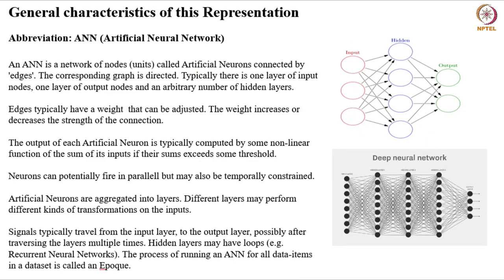While the real biological system is very complex and heterogeneous, we now turn to computer science and define what we call the computational model for artificial neural networks — which is of course inspired by the real thing, but much simpler, more abstract, and more homogeneous. An artificial neural network (ANN) is a network of nodes or units called artificial neurons, connected by edges. The corresponding graph is directed, typically with one input layer, one output layer, and an arbitrary number of hidden layers in between.